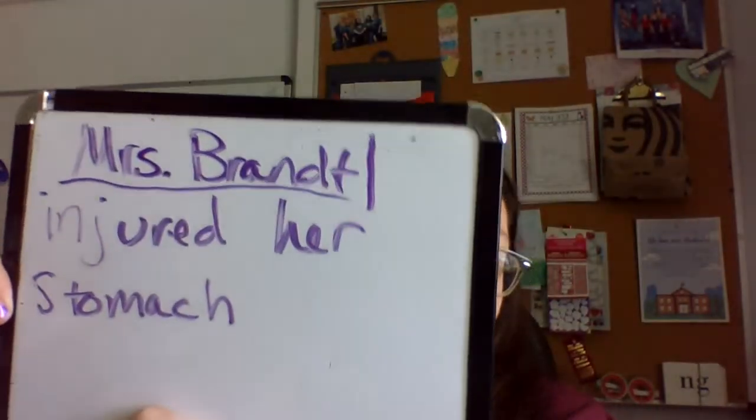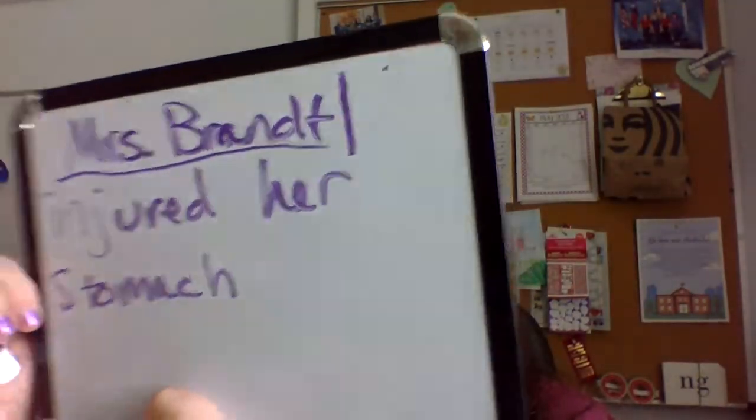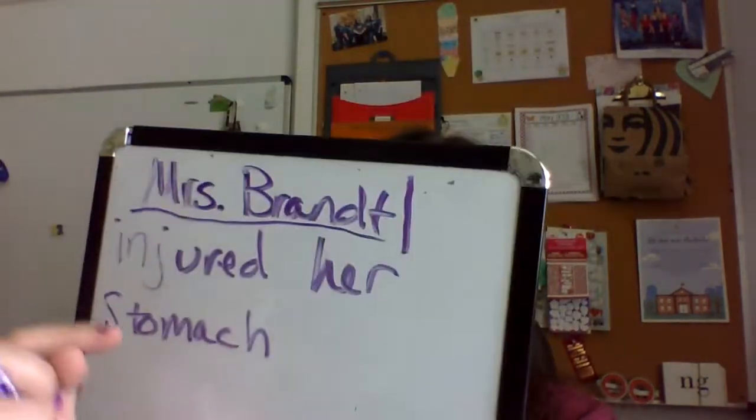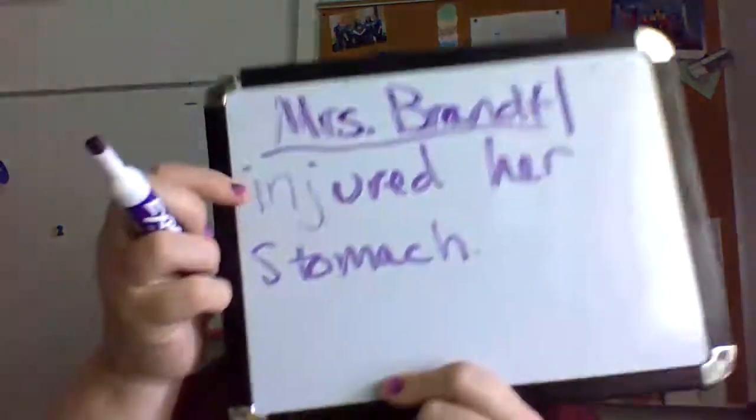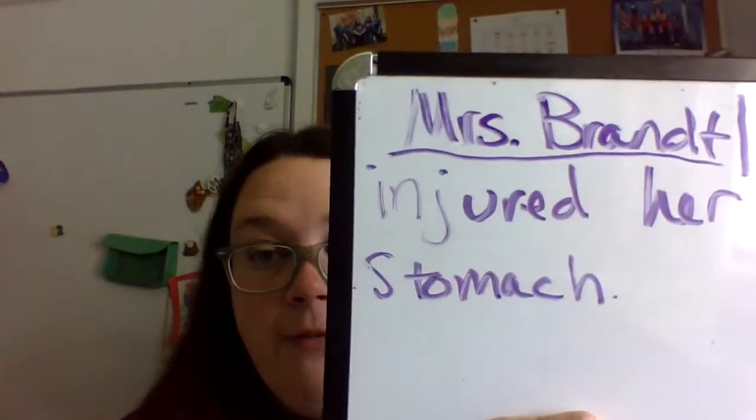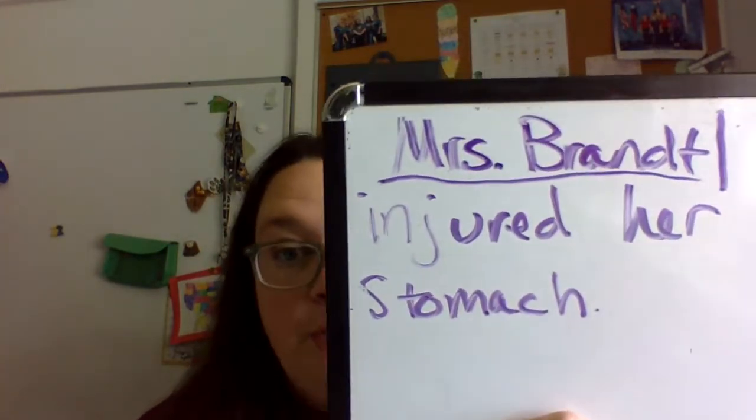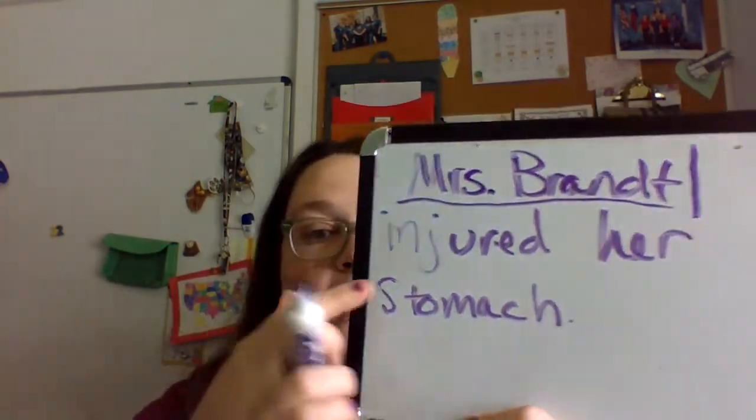So when you have to underline the subject, you're going to underline this one, and you're going to draw a line right here after the person. Mrs. Brandt is the subject, and then the rest of it — the predicate — is the action part: injured her stomach. Even though I have 'her' and 'stomach' here and those aren't action words, it's part of the action. That's called the predicate. Subject is when it's about someone — it's usually right there at the front, before the action part. Then the action part is the verb, and then anything else that goes with it. That's the predicate.